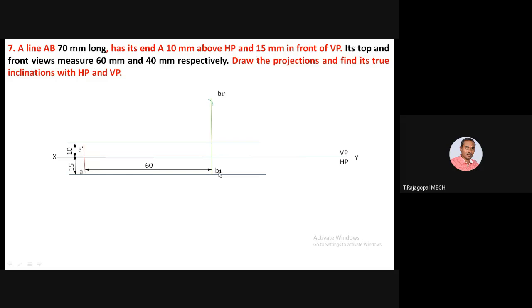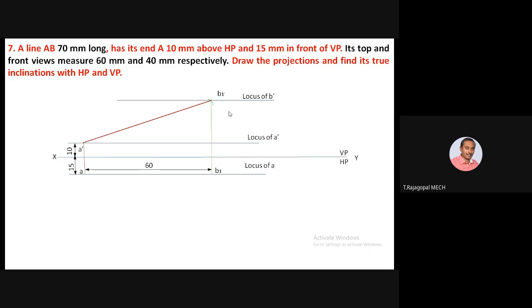We can name that intersection point B1 in the top view and B1-dash correspondingly in the front view. Join A-dash and B1-dash — this is the true length in the front view. Through point B1-dash, complete the locus of B-dash, parallel to XY. The locus of A-dash and locus of A were already fixed using 10 mm above HP and 15 mm in front of VP.